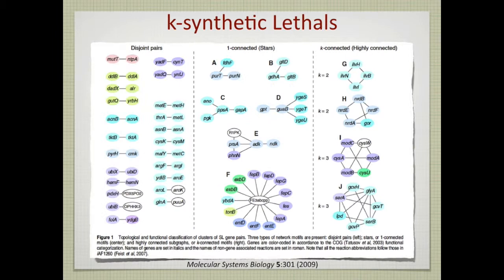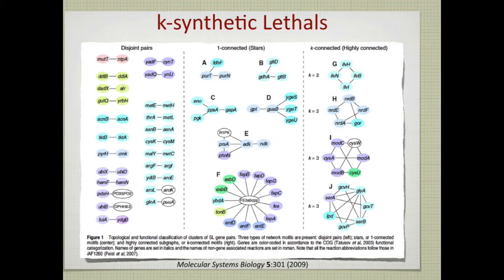You can take this to scale and look at K synthetic lethals, where K is the number of genes you knockout. And Kostas Maranas at Penn State has gone the full nine yards here and calculated all K synthetic lethals in genome scale models and show the various relationships between genes and the model when it comes to synthetic lethality. So if you're interested in stuff like that, this is very easy to do computationally.